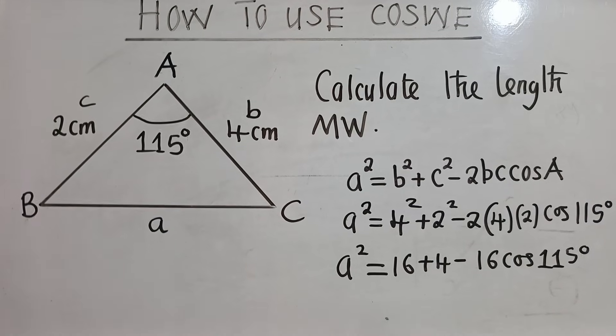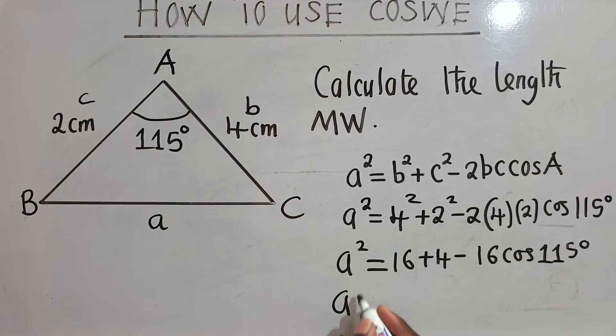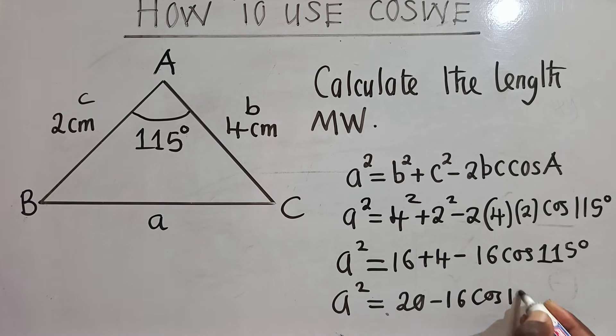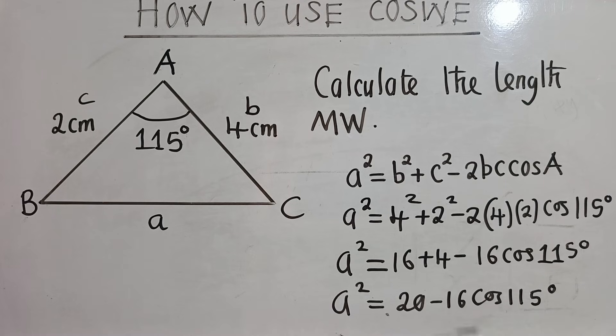And then here, we shall say a². Hopefully you're following. a² is equal to here, it's 20 - 16 cos 115 degrees.